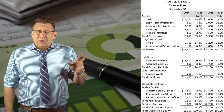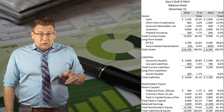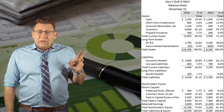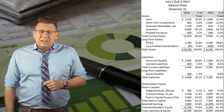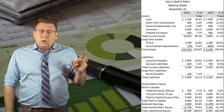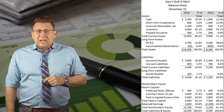Here's an example of Apu's Quickie Mart's balance sheet. Notice again how each item is less than 100% because no amount is larger than total assets.